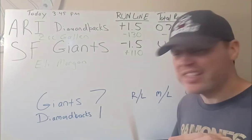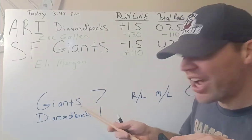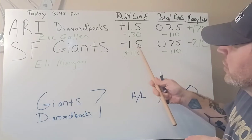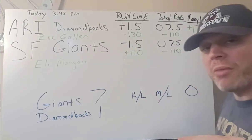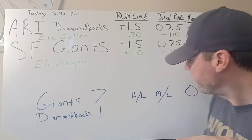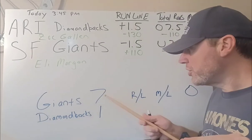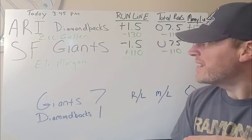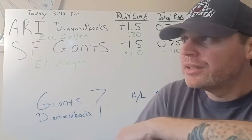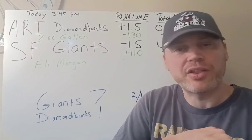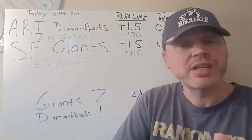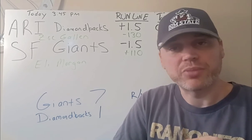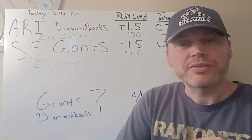What ended up happening in this game — and this is a game from 2021 — the Giants ended up winning seven to one. So the Giants won on the run line because they won by more than two, they won on the money line because they won the game, and the over came out because the total was eight. So that's it for a basic baseball line. There are variations and I'll get into those in other videos. Check out my playlist and I'll link some in the description below. Good luck everybody, thanks for watching.